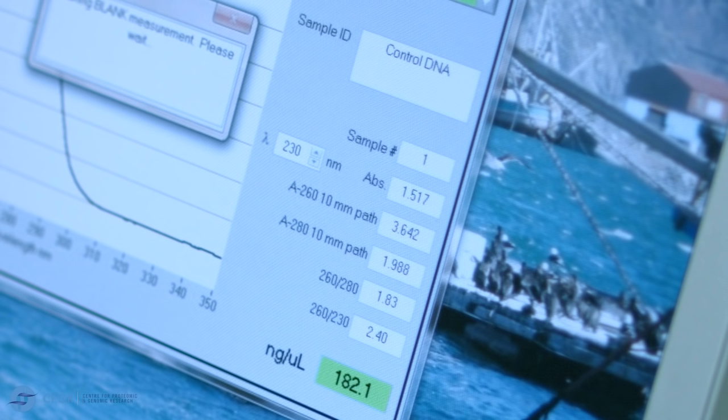The gel is set to run at 100 volts for 20 to 30 minutes. At the end of the run time, the gel is removed from the gel tank and transferred to a gel dock system or transilluminator to visualize the DNA.